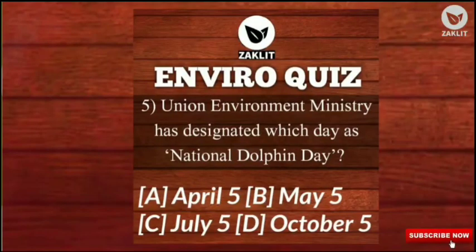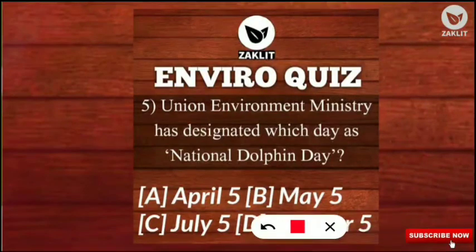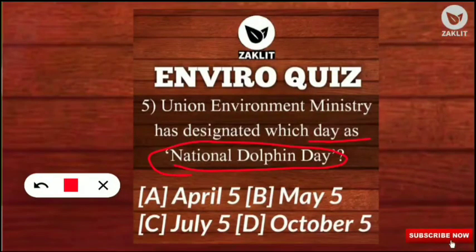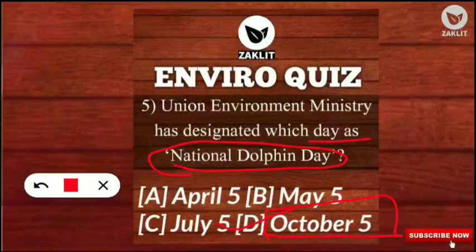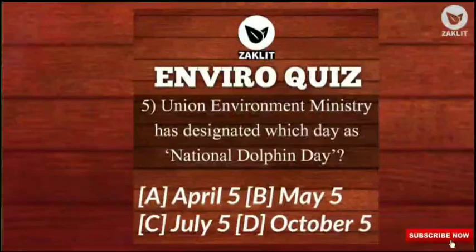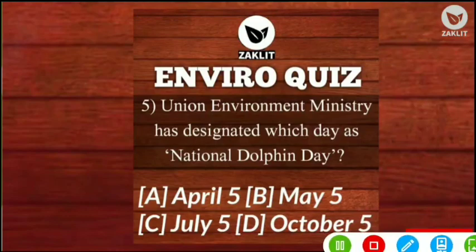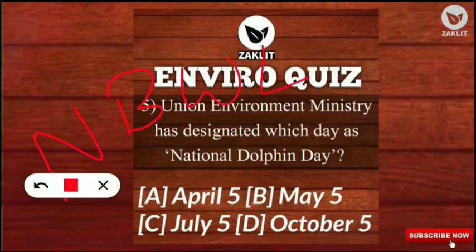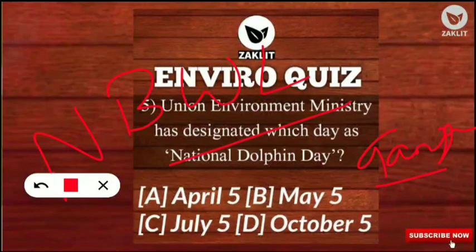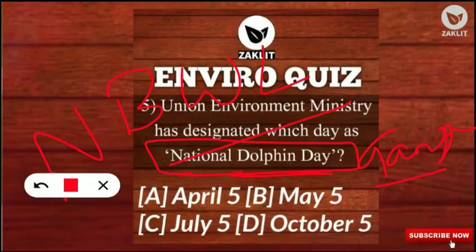Question 5: the Union Environment Ministry has designated which day as National Dolphin Day? The correct option is option D — October 5th is regarded as National Dolphin Day. The decision was taken by the NBWL — National Board for Wildlife. Experts say the ministry should focus on improving the flow and water quality in River Ganga and its tributaries to support the survival of the Gangetic dolphin.